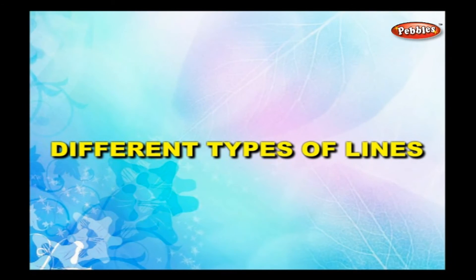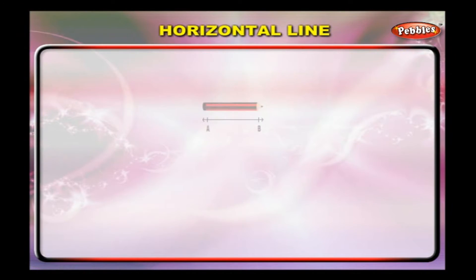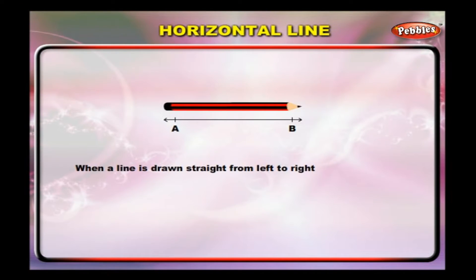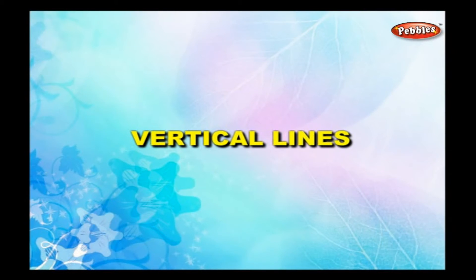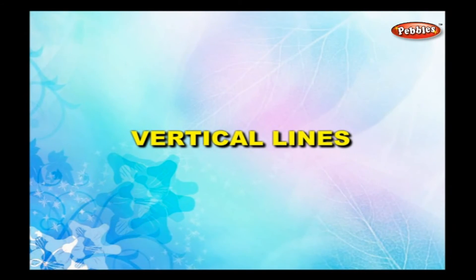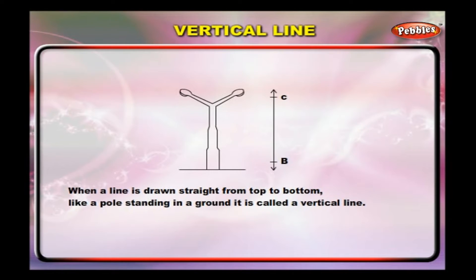Different types of lines. Horizontal lines: when a line is drawn straight from left to right, in the way a pencil lies on a table, it is called a horizontal line. In this figure, the line AB is a horizontal line. Vertical lines: when a line is drawn straight from top to bottom, like a pole standing in the ground, it is called a vertical line. In this figure, the line CB is a vertical line.